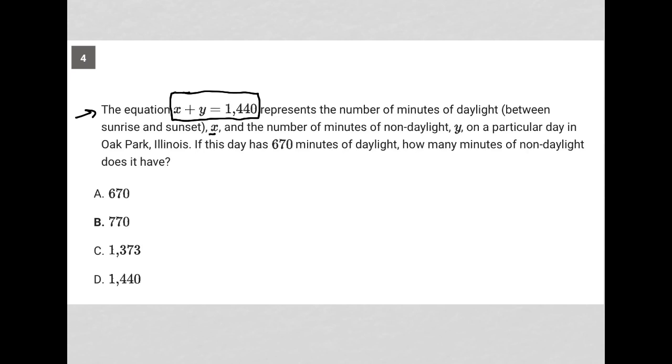All right, so X is the number of minutes of daylight, and Y is the number of minutes of non-daylight on a particular day in Oak Park, Illinois.